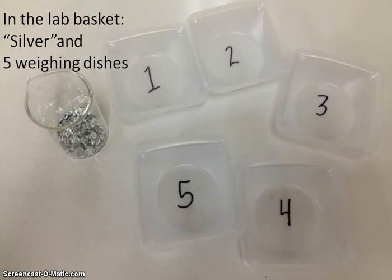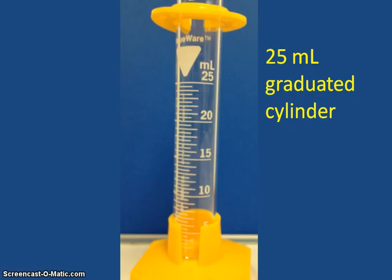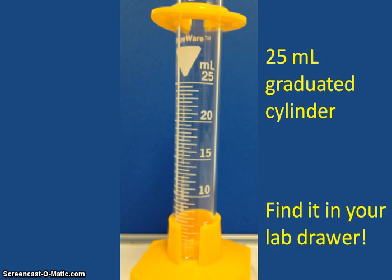You will find in your lab basket a sample of a metal that appears to be silver colored or gold colored, and you will also find five weighing dishes already labeled for you. You will also need a 25 mL graduated cylinder which you can find in your lab drawer.